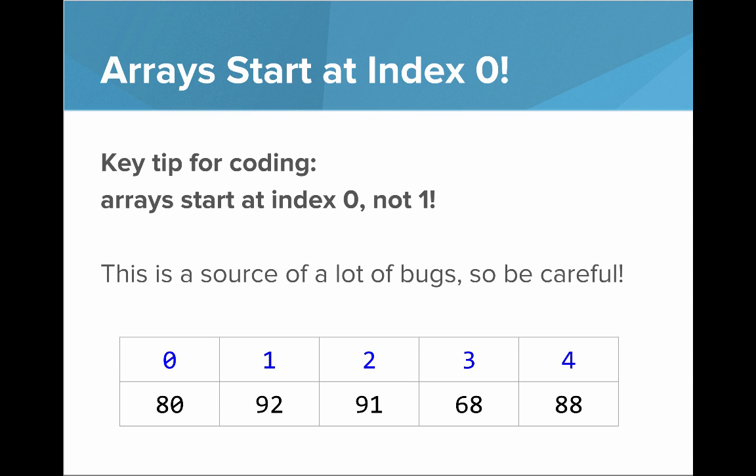So I've mentioned this before, but it's a really key point. Arrays start at index zero, arrays start at index zero, not one. This is a source of a lot of bugs, so be careful. Remember, this array has five elements, starts at index zero and goes up to index four.